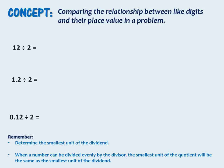Looking at the three problems, we can see that the dividends all contain the digits 1 and 2. In the first problem those digits represent the number 12. In the second problem the same digits represent the number 1 and 2 tenths. And in the third, the value of the digits is 12 hundredths.